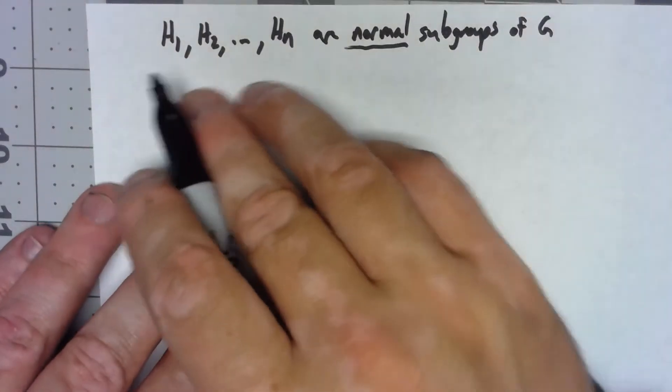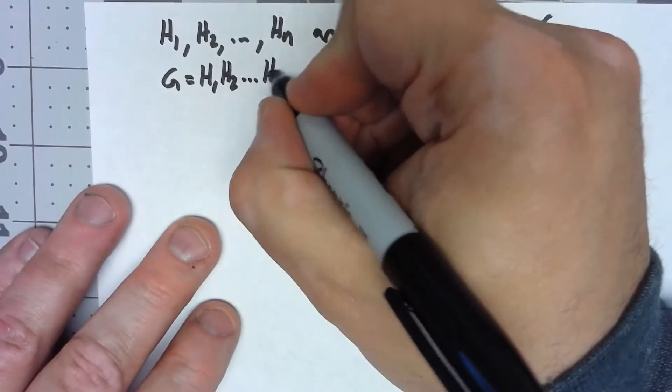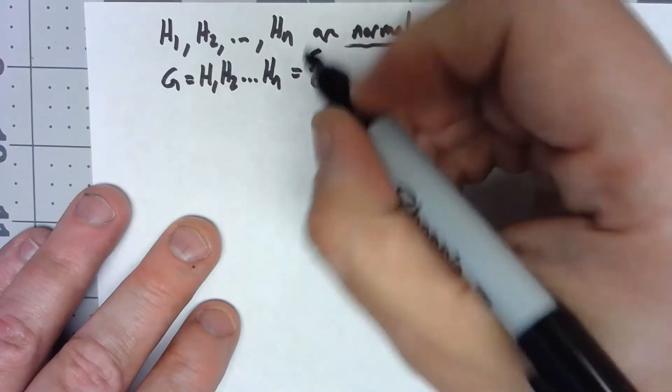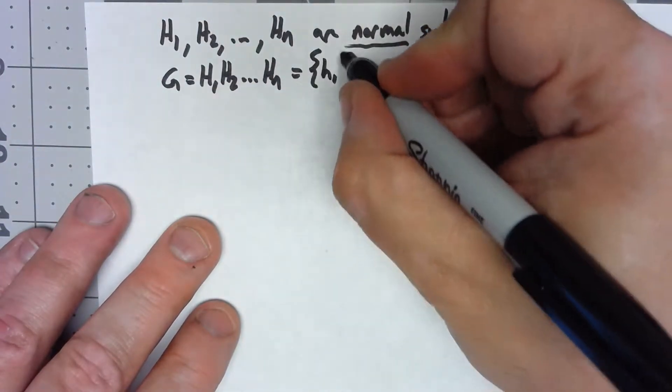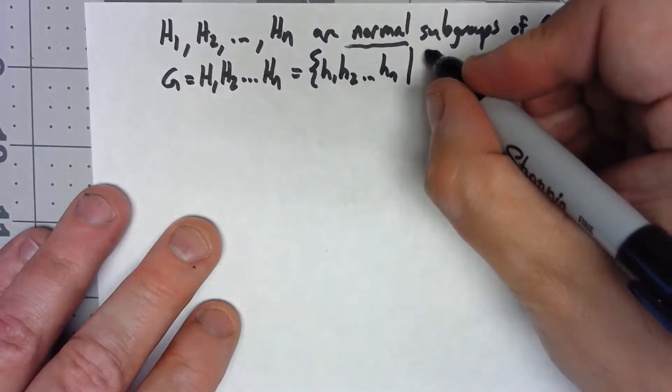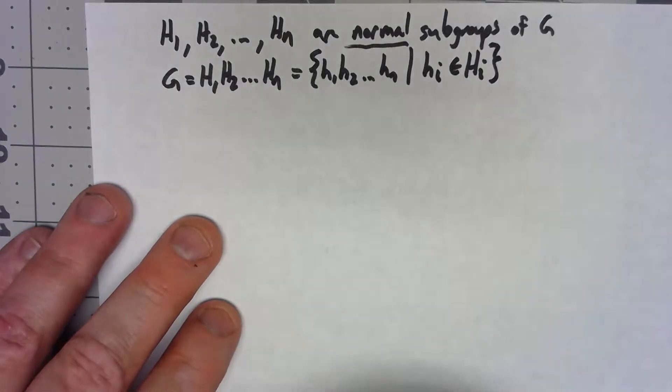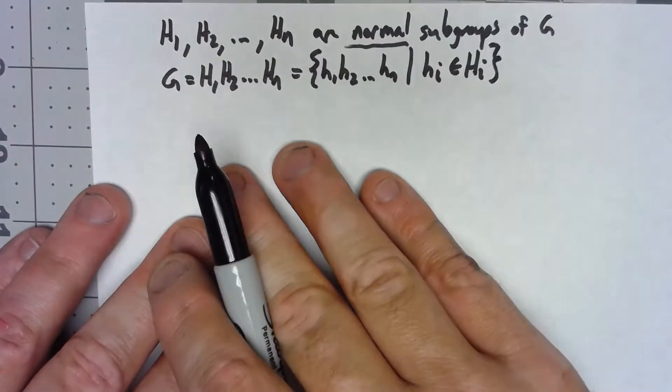Now continuing on, we want G to be that whole multiplying those sets together. So that would be the set of all h1, h2, up to hn such that each of those hi's come from the parent capital Hi. That's again what you would expect.